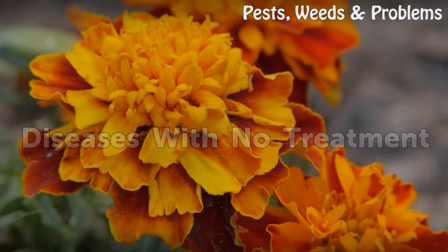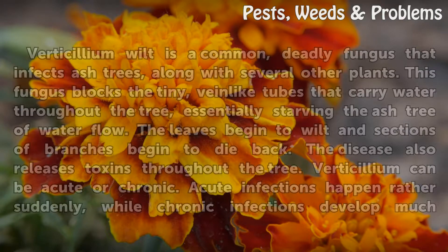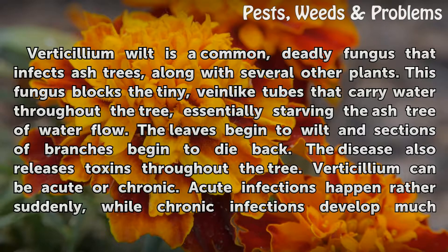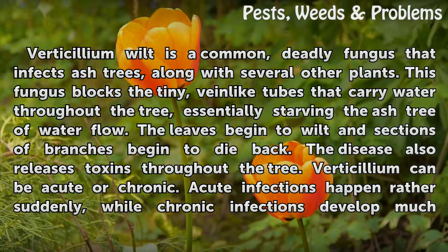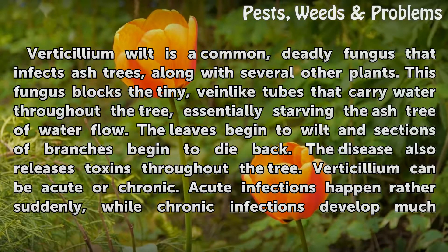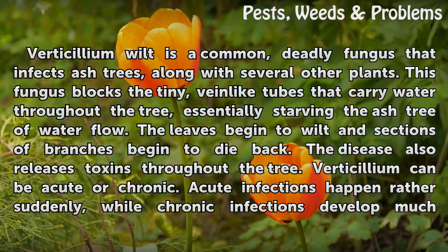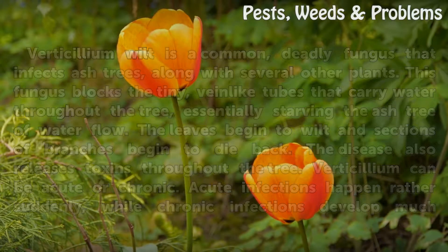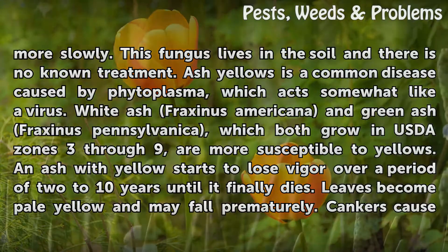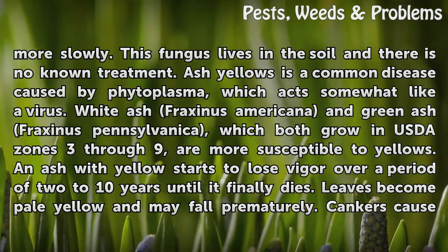Diseases with no treatment. Verticillium wilt is a common, deadly fungus that infects Ash trees, along with several other plants. This fungus blocks the tiny vein-like tubes that carry water throughout the tree, essentially starving the Ash tree of water flow. The leaves begin to wilt and sections of branches begin to die back. The disease also releases toxins throughout the tree. Verticillium can be acute or chronic — acute infections happen rather suddenly, while chronic infections develop much more slowly. This fungus lives in the soil and there is no known treatment.